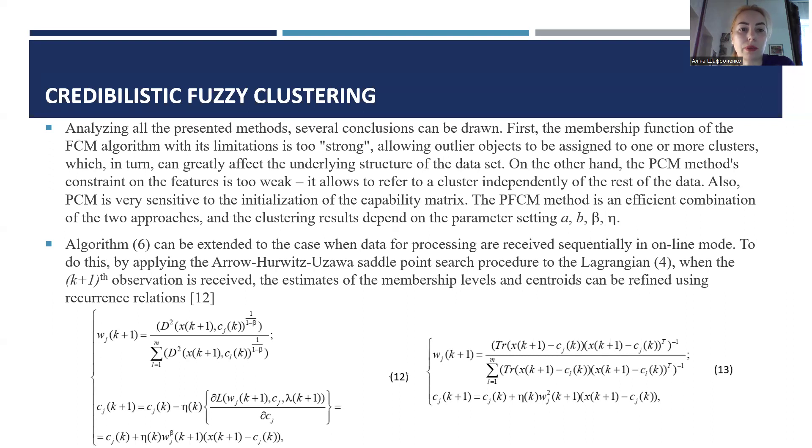Analyzing all the precedent methods, several conclusions can be drawn. First, the membership function of the FCM algorithm with its limitation is too strong, allowing outlier objects to be assigned to one or more clusters, which in turn can greatly affect the underlying structure of the dataset. On the other hand, the PCAM method's constraint on the feature is too weak. It allows referring to a cluster independently of the rest of the data.